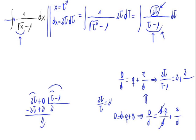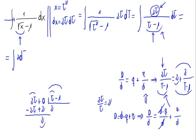Applying this formula, 2t divided by t minus 1 equals 2 (the quotient) plus 2 divided by t minus 1. We can substitute this into our integral, giving us the integral of 2 dt plus the integral of 2 divided by (t minus 1) dt.